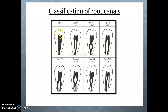For entry points: Type 1 has one entry, Type 4 has two. Then repeat the opposite values — 2, 1 — and continue: 1, 2, then 1, 2, 1, 2. This is the simplest way to remember the Vertucci classification systematically.